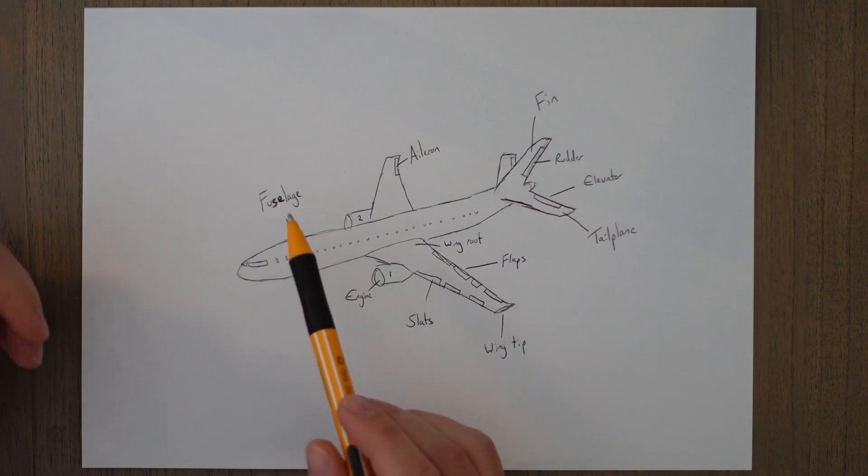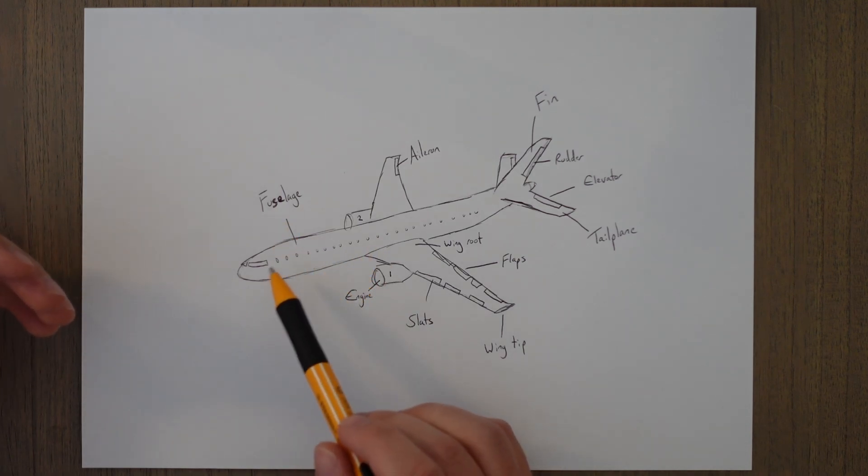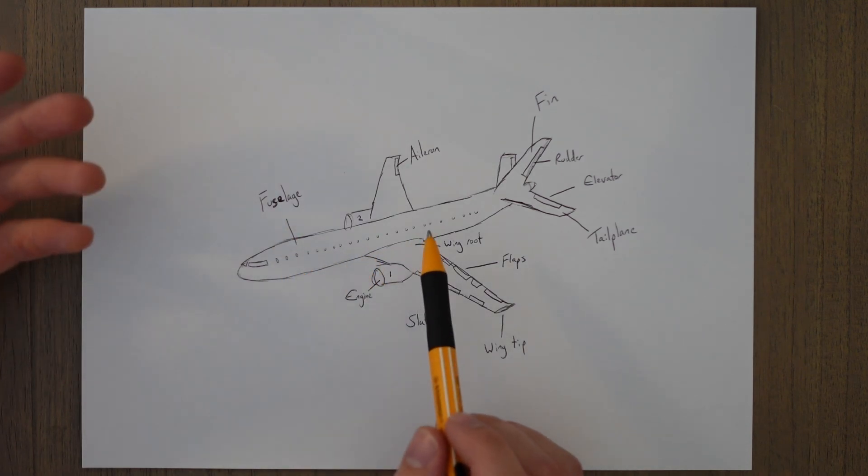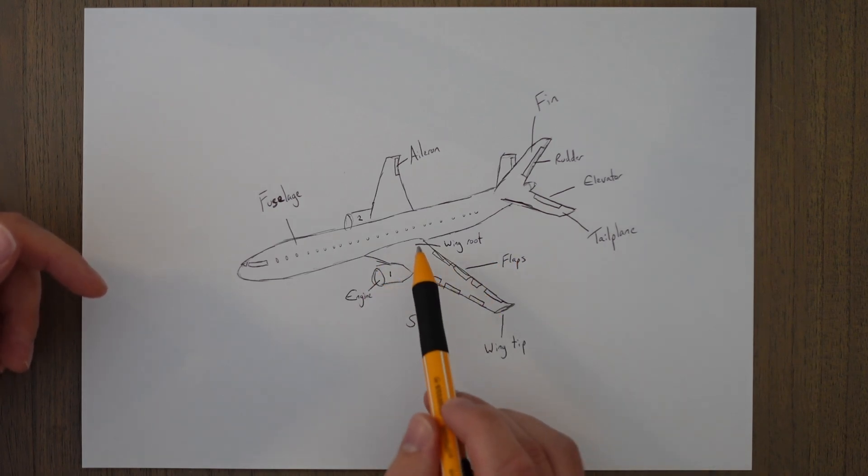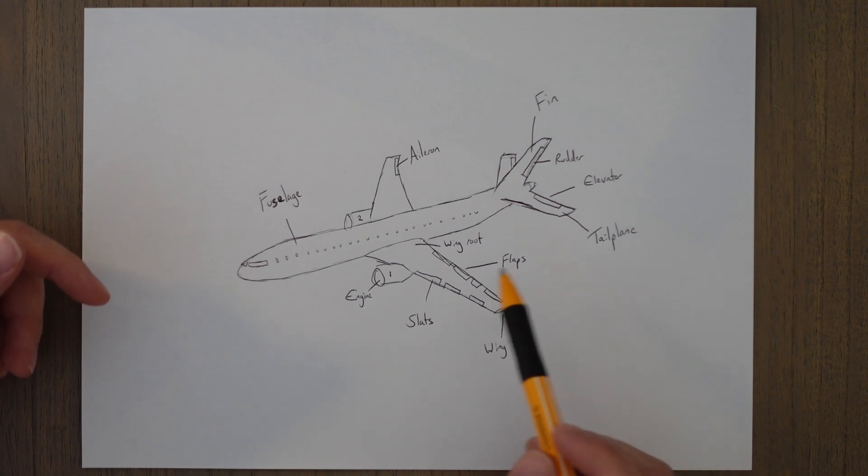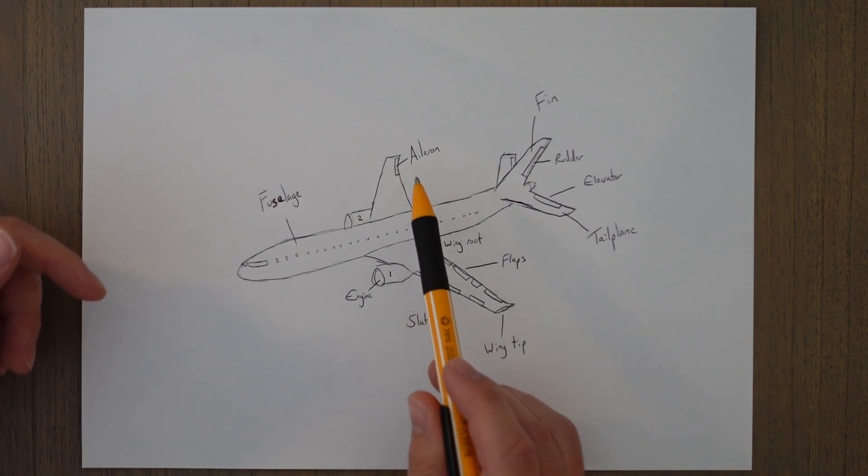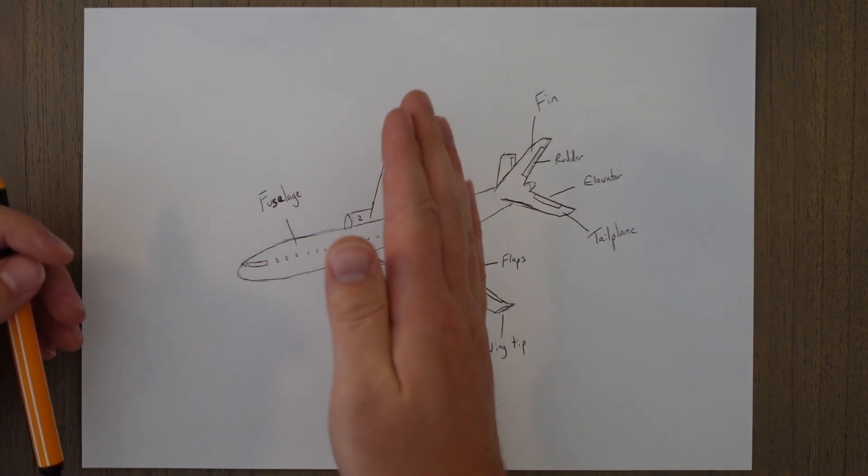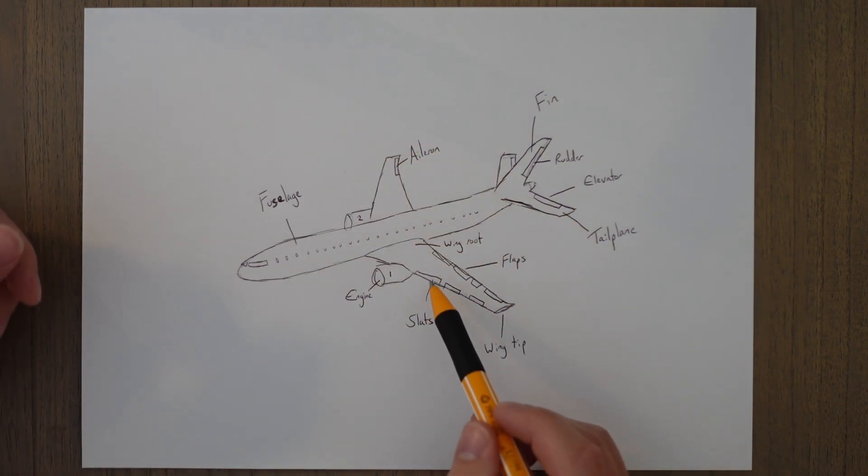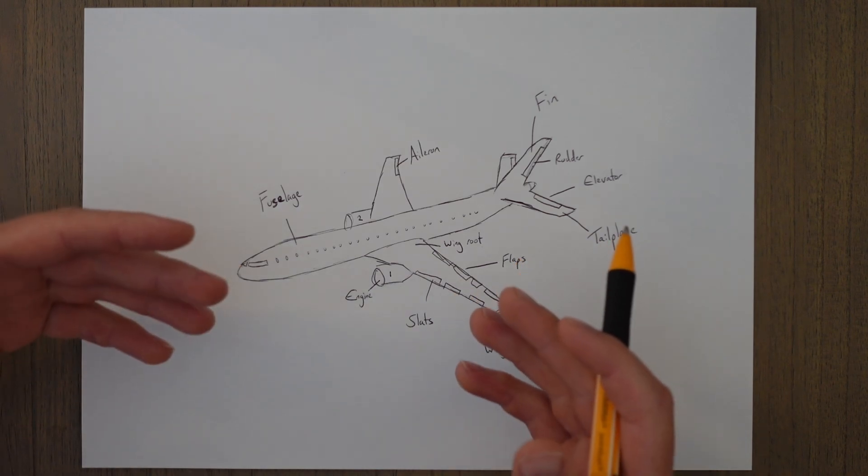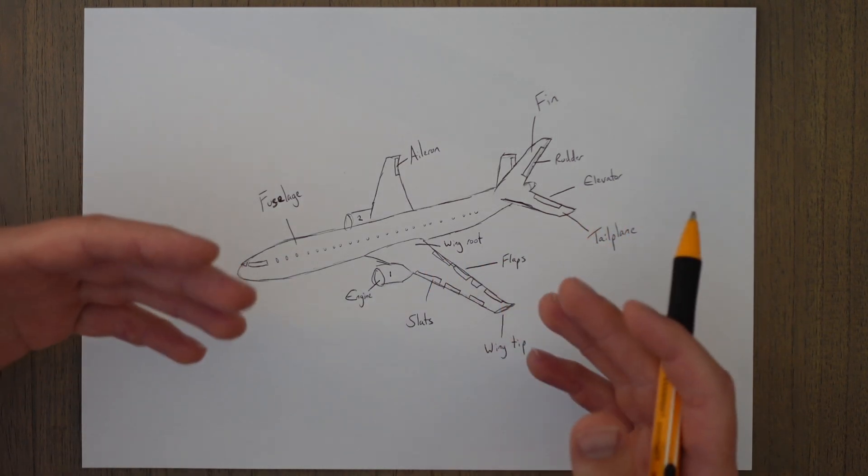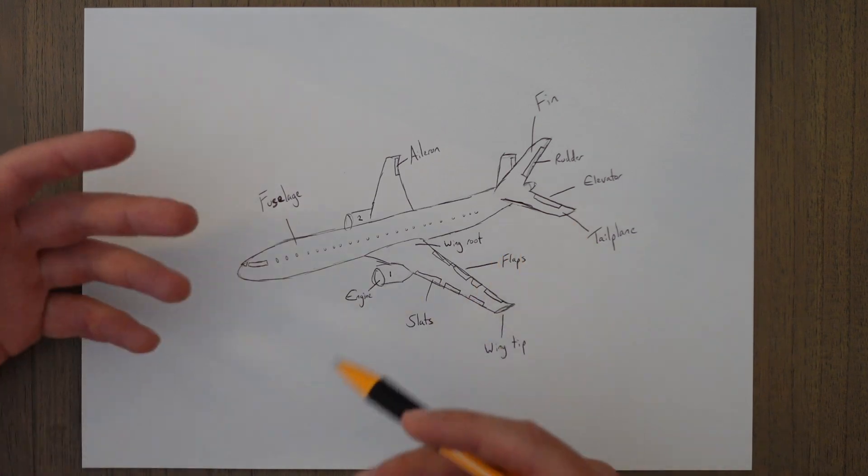Starting things off, we've got the fuselage, that's the main bit where passengers, bags, and staff move around in. You've got engines, one on the aircraft left, two on the aircraft right. The wings have the root closest to the fuselage and tips further away. On the wings you have flight controls, the ailerons that help you bank left and right. You've got slats and flaps that provide extra lift, which allows you to fly slower for landing and takeoff.